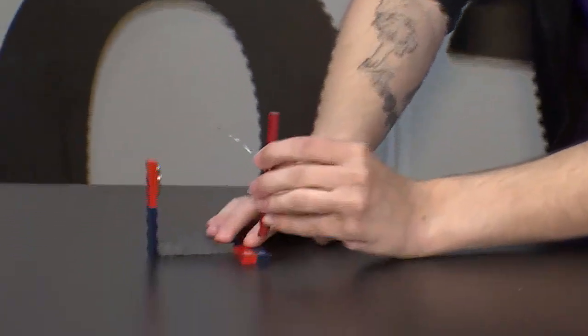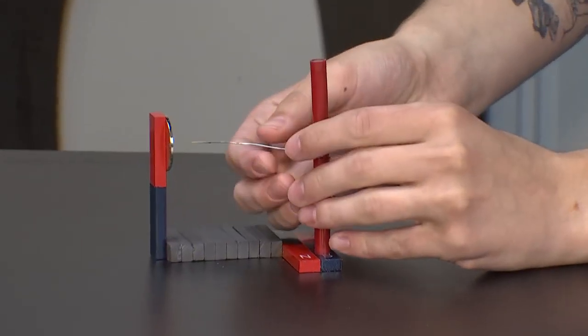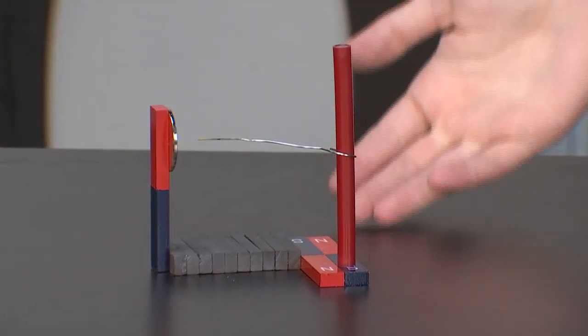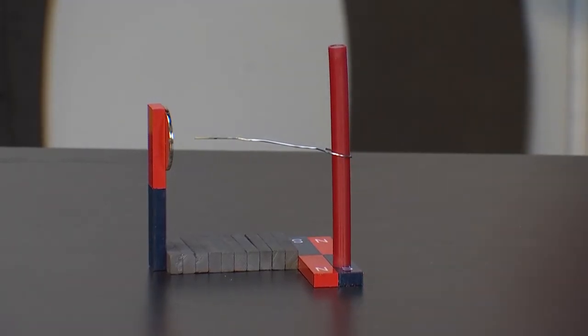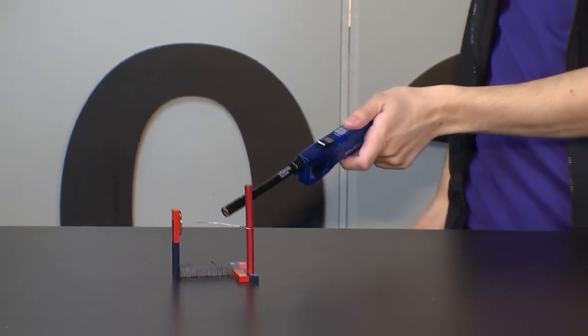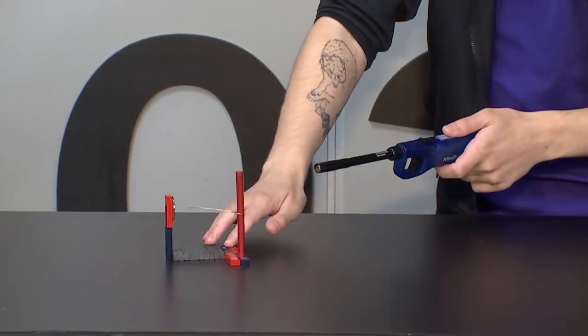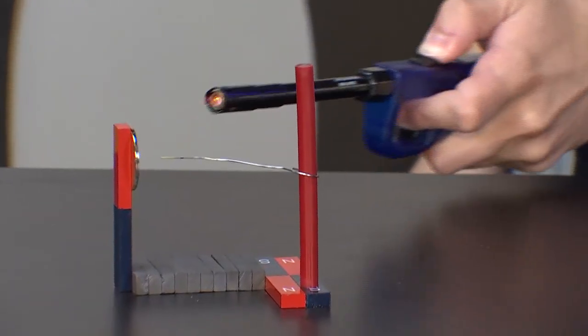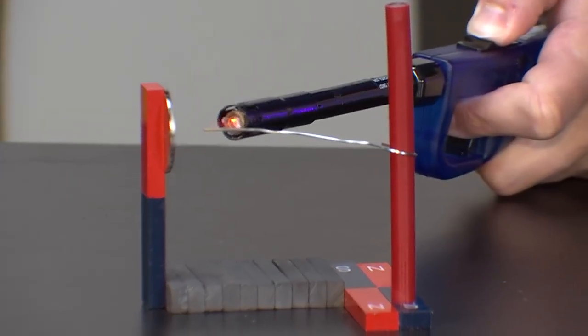But once we attach our pole and we bring it close, now that paper clip is getting attracted to our magnet. This is where the interesting part comes in. We are now going to take a lighter and I'm going to light the end of our paper clip. We're going to take a look at what happens. So I'm going to go ahead and turn our lighter on. I'm going to start heating this paper clip up.